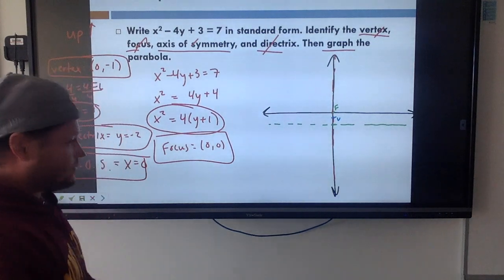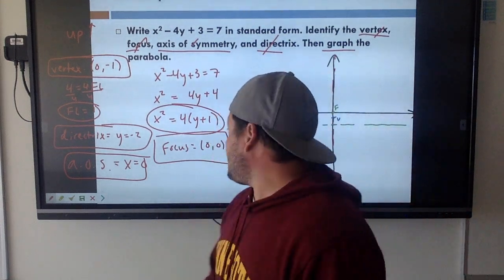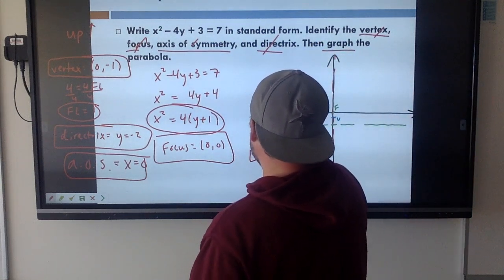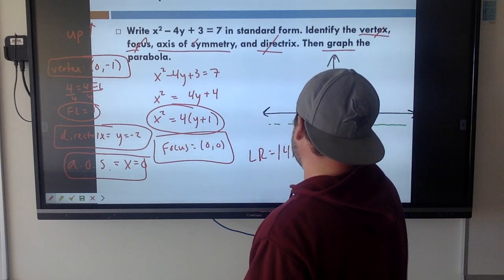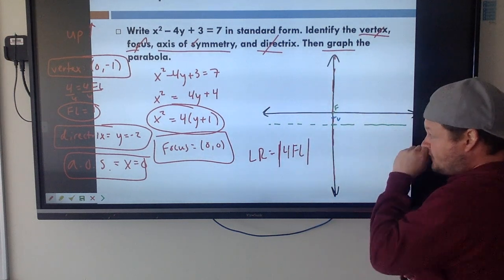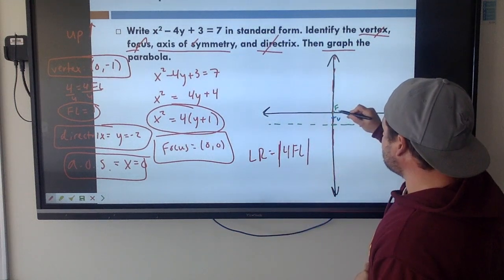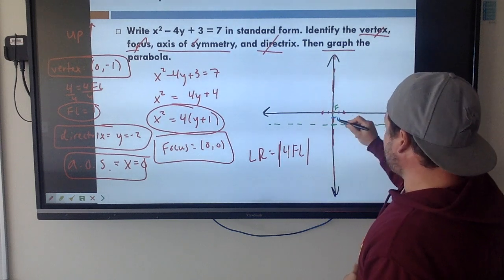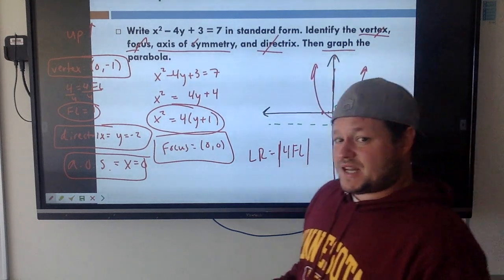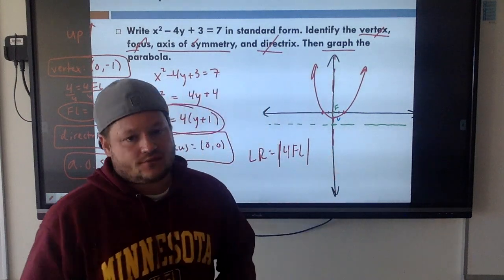Now I just have to finish graphing. We need three points - if you do not have three points you're not going to get full credit. In order to find the two points on the sides, we go back to the latus rectum. The latus rectum is equal to the absolute value of 4 times the focal length. Two times the focal length should be to the left of the focus, and two times the focal length to the right. My focal length is 1, so I go 2 units to the right and 2 units to the left. Now I have my vertex and two points around my parabola.